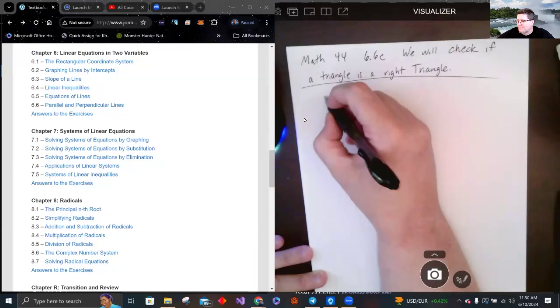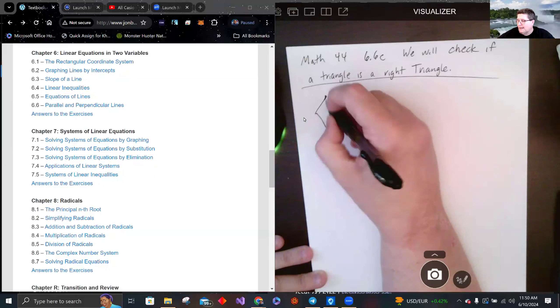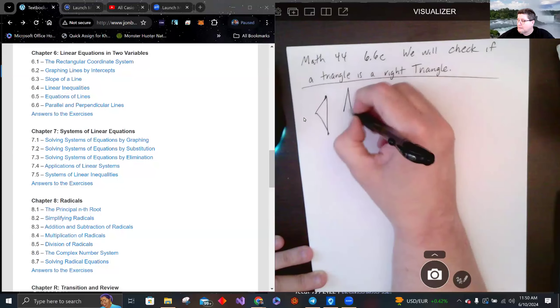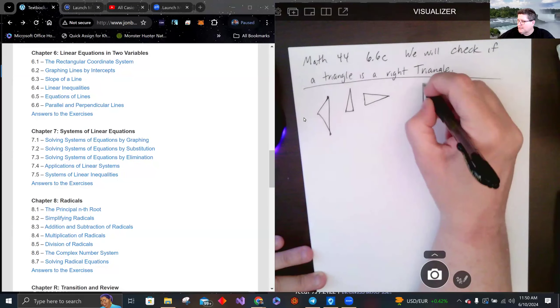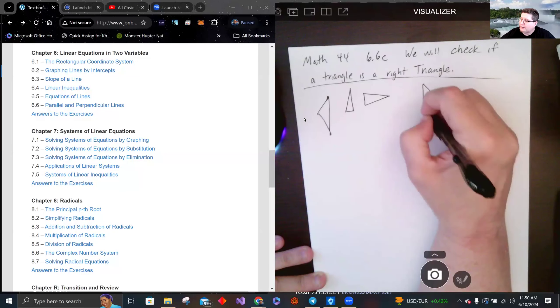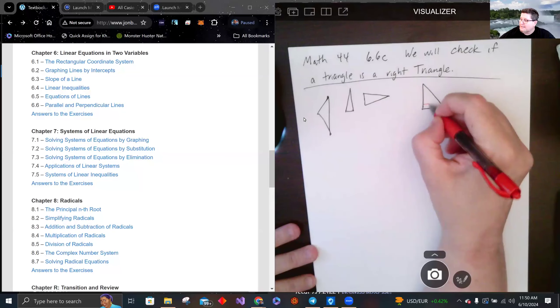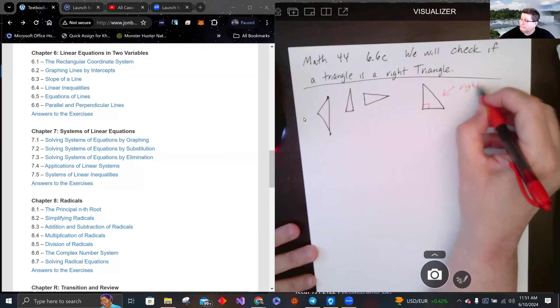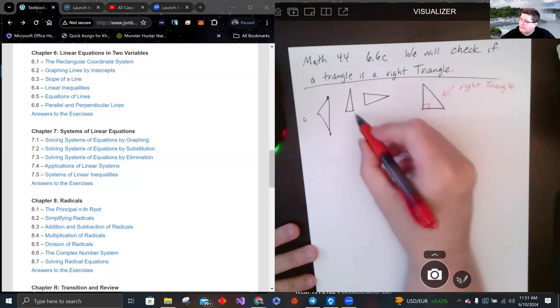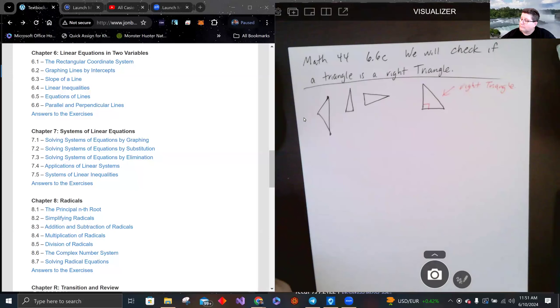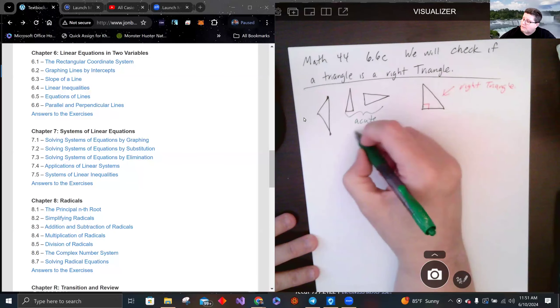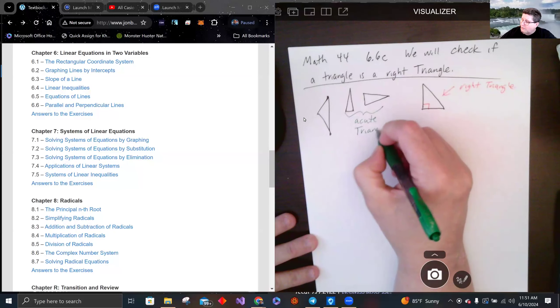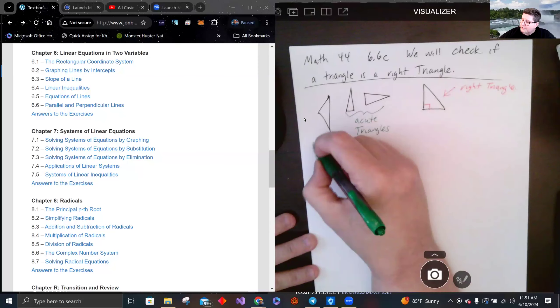Triangles can be any shape, but a right triangle has two of the edges that make a perpendicular intersection. This is a right triangle and these are not. These two are actually both called acute triangles because their angles are all less than that, and this one's an obtuse triangle.